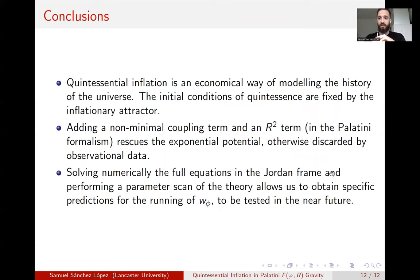Okay. So to conclude, quintessential inflation is an economical way of modeling the history of the universe. The initial conditions of quintessence are fixed by the inflationary attractor. This is perhaps the most attractive characteristic of the quintessential inflation models. Adding a non-minimal coupling between the field and gravity and an R-squared term in the Palatini formalism rescues the exponential potential, which was observationally discarded. And we solved the full equations of motion in the Jordan frame with the parameters of the theory, and we obtained testable observational predictions in the near future. Thank you very much. Thank you very much for your attention.